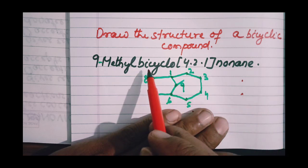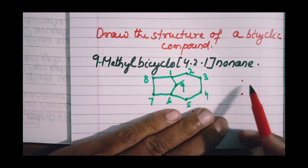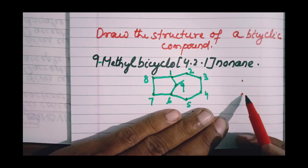As it is a bicyclic compound, it has two bridgehead carbons. Those two bridgehead carbons are shown by two dots here.